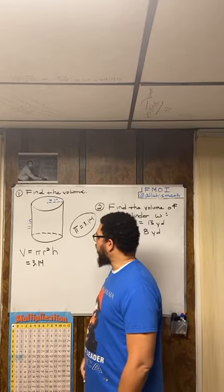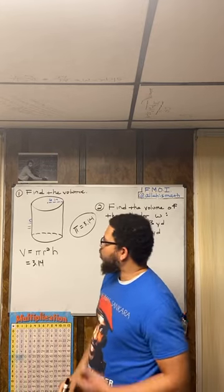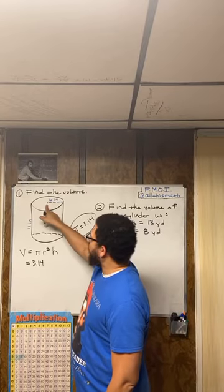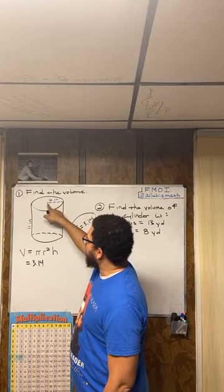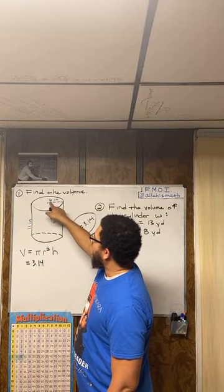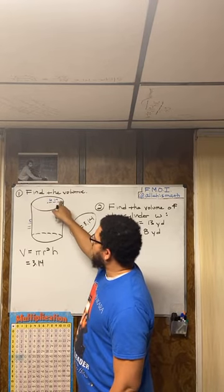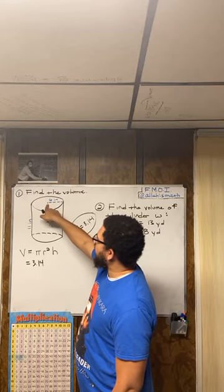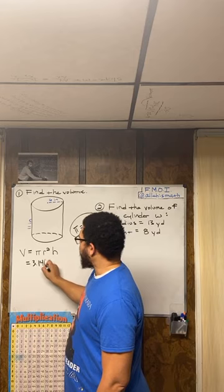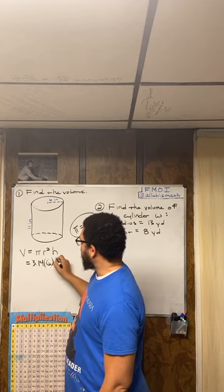So then you go to r. R stands for radius. What is the radius? The radius is the length from the center of the circle, the circular part of the cylinder, to the edge of the circle. That's what the radius is, and here it's labeled as six inches. So from the center of the cylinder to the edge is six inches. So therefore, I'm going to replace the r with a six, and I'm multiplying, so I'm going to put parentheses.